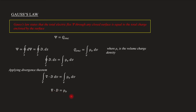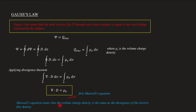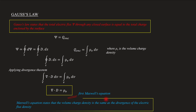That gives us: del dot D is equal to rho_v. This expression is a very, very important expression. It is known as the first Maxwell's equation. Maxwell's equation states that the volume charge density is the same as the divergence of the electric flux density. From Gauss's Law, we get this expression which is the first Maxwell's equation.